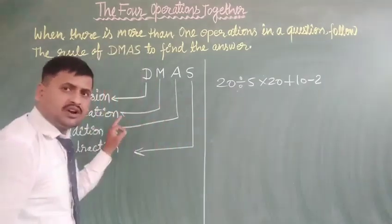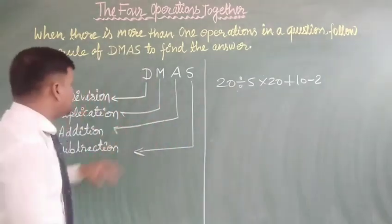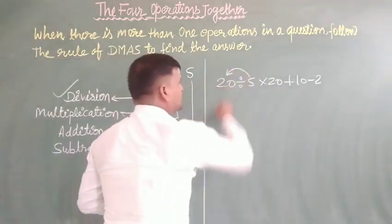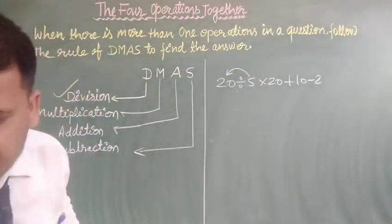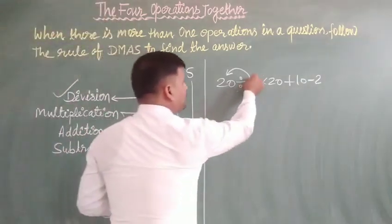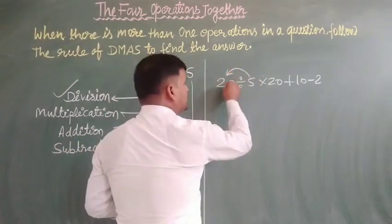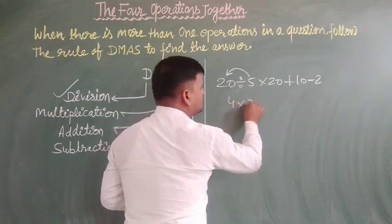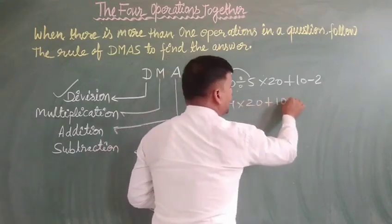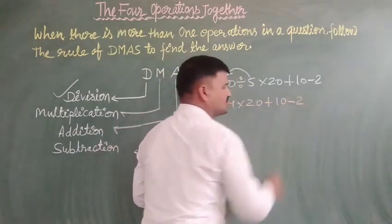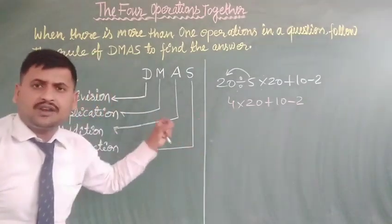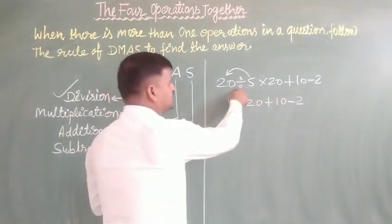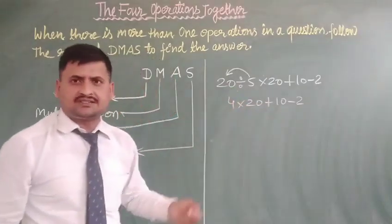So let's see how we can solve this question. Now we are going to do division first — division is the first operation. Let's see: 20 divided by 5. First work is division, and that first work will be completed first.